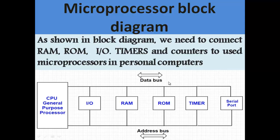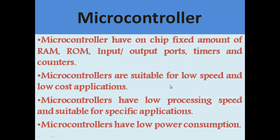Now, coming to the microcontroller — a microcontroller is basically a single-chip, ready-to-use computer which has internal RAM, ROM, input/output ports, timers, and counters. Additionally, there are many other features inside a microcontroller. For example, PIC microcontrollers and AVR microcontrollers come with built-in analog-to-digital converters and digital-to-analog converters. Simply put, microcontrollers are ready-to-use computers on a single dedicated chip designed for a dedicated purpose.